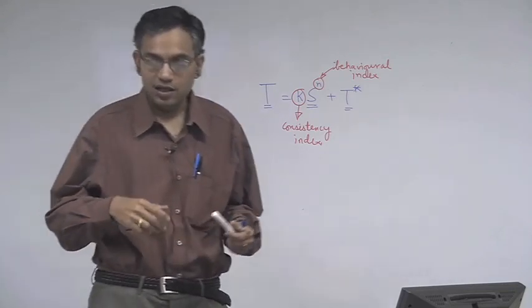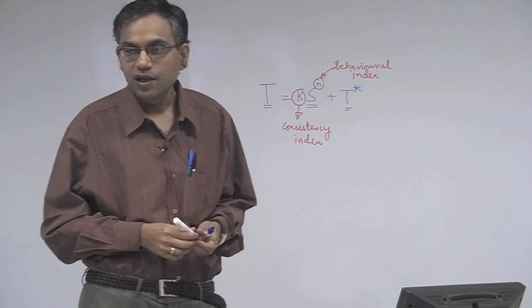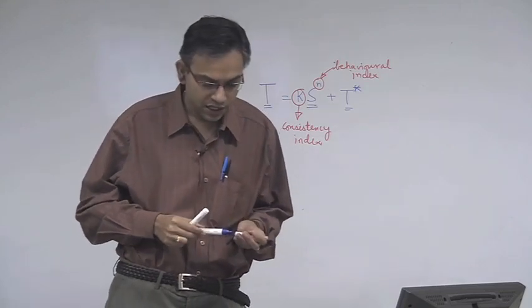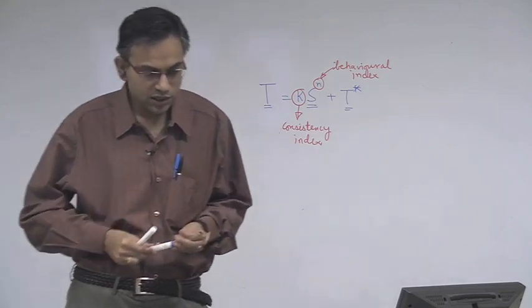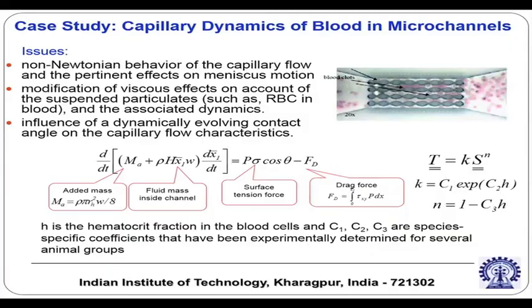If you have a micro-channel or micro-capillary through which blood is being transmitted and the flow characteristics of the blood are changing, that might give an indication of the existence of a certain disease in the blood sample. That is many times critical, and let us see what are the parameters on which this will depend.